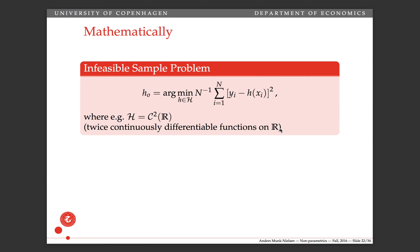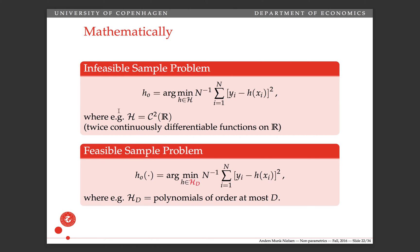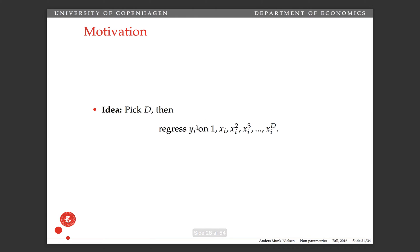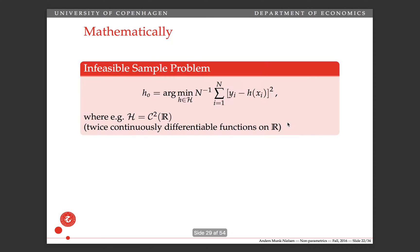More generally, or mathematically, the idea is that you choose the function — your estimate of the true function — as the function in some function space that minimizes the squared residual. This function space might be, for example, the space of twice continuously differentiable functions in R. The problem is we can't really search over a function space; we know how to search over parameter space. So the idea is to replace this infeasible sample problem with a feasible sample problem, where we search over a d-dimensional function space — for example, the space of polynomials of order at most d. This we know how to search over, because it amounts to estimating d coefficients, which is exactly what regressing y on this d-dimensional polynomial does.